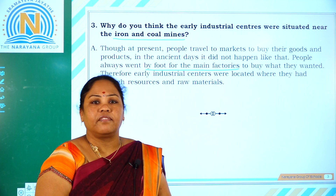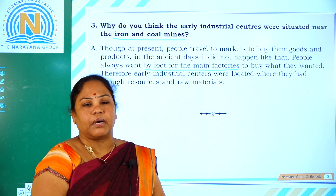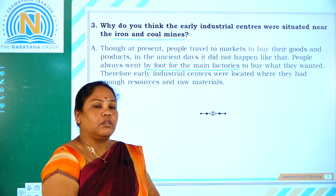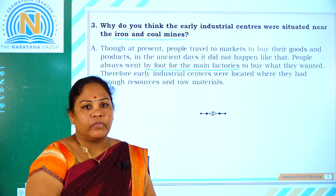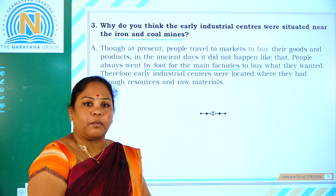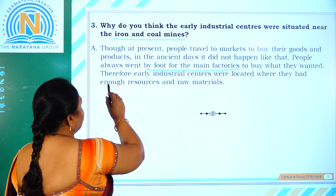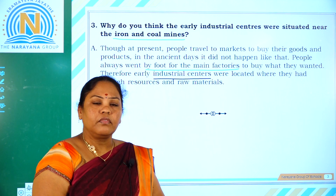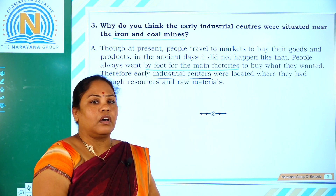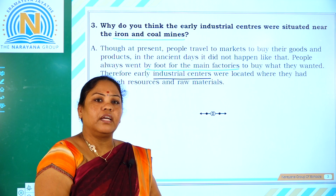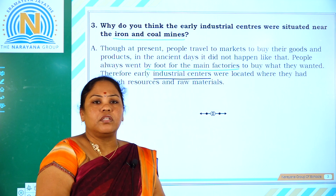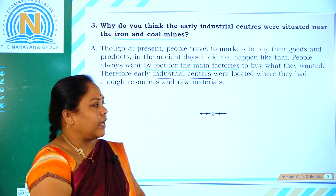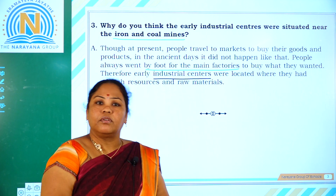Nowadays, we need not move to the factories — everything is available in the market, which can be purchased directly by consumers. Earlier, people used to move on foot to the factories to purchase what they required. Therefore, early industrial centers were located where they had enough resources. These locations were situated near regions where the minerals, like iron and coal, were available in plenty. This is all about today's assignment, children.